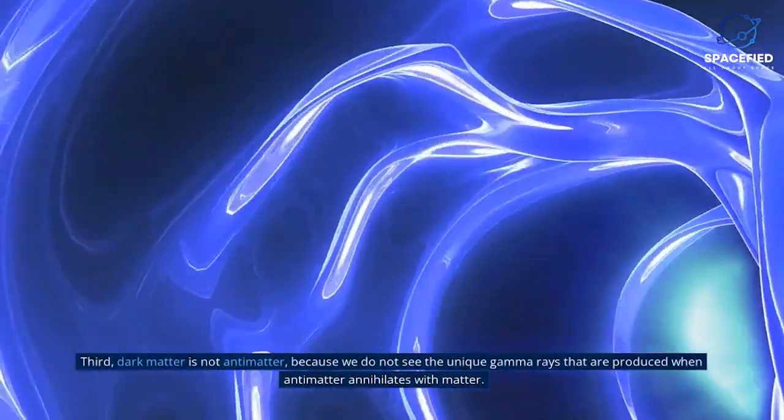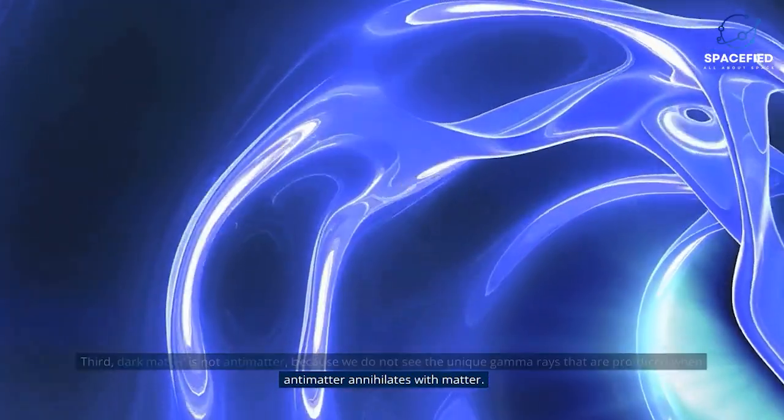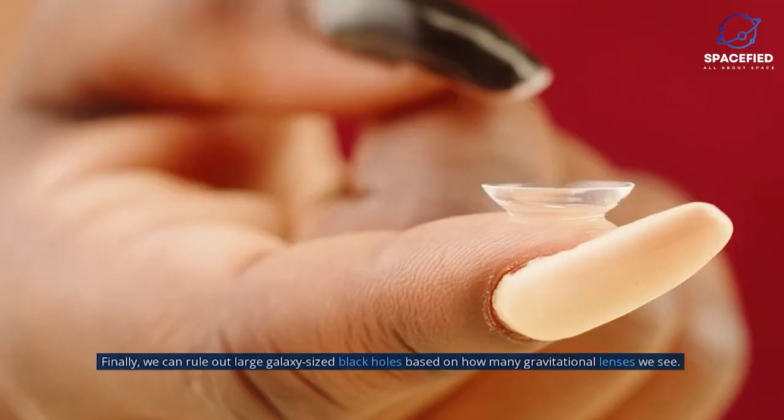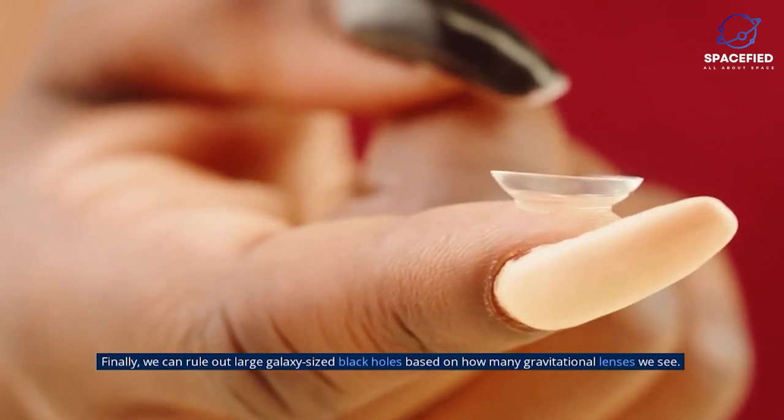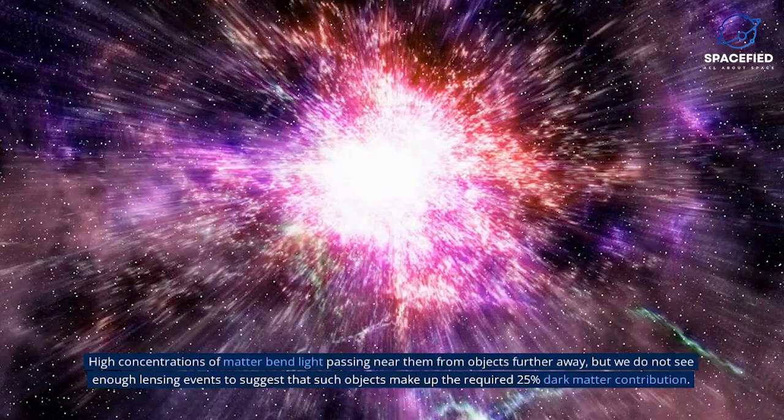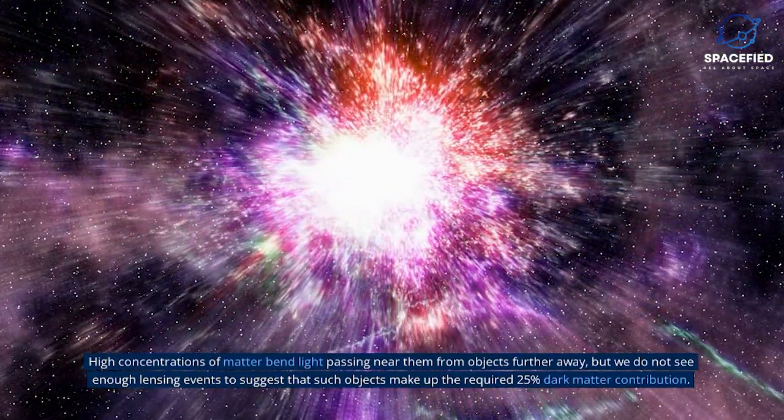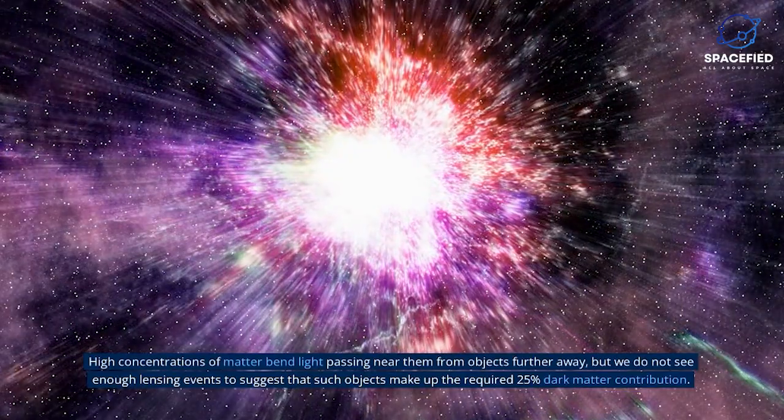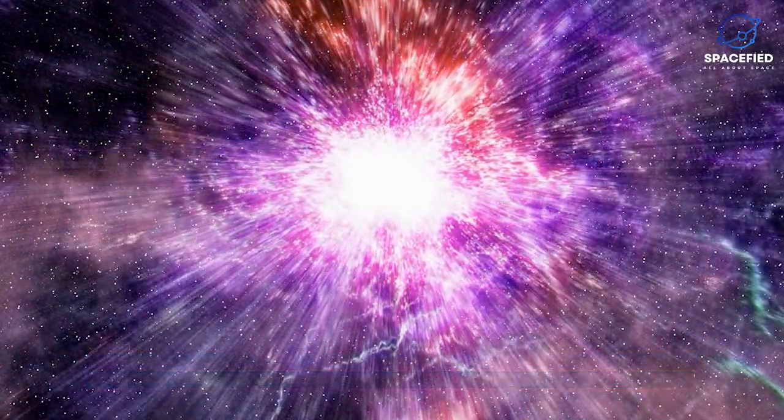Third, dark matter is not antimatter, because we do not see the unique gamma rays that are produced when antimatter annihilates with matter. Finally, we can rule out large galaxy-sized black holes based on how many gravitational lenses we see. High concentrations of matter bend light passing near them from objects further away, but we do not see enough lensing events to suggest that such objects make up the required 25% dark matter contribution.